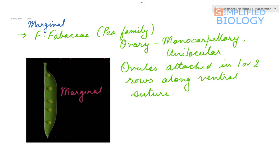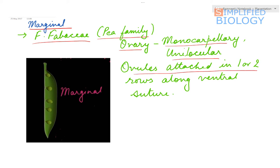Starting with marginal placentation. Marginal placentation is a characteristic of family Fabaceae, the pea family — this is the easiest example to remember. In marginal placentation, the ovary is always monocarpillary and unilocular, while the ovules are attached in one or two rows along the ventral suture.